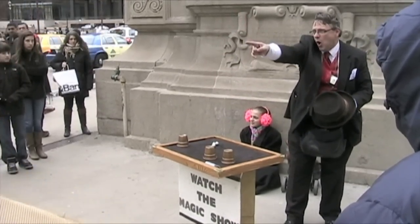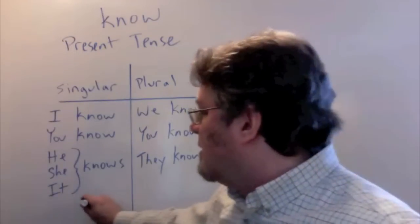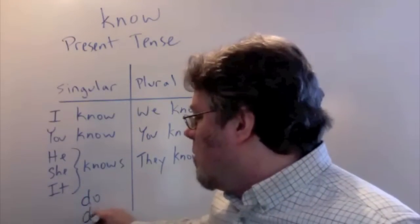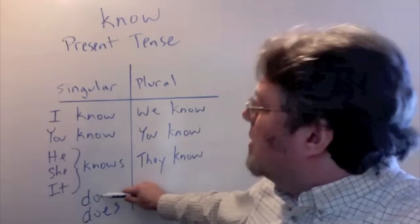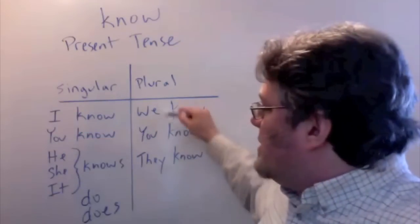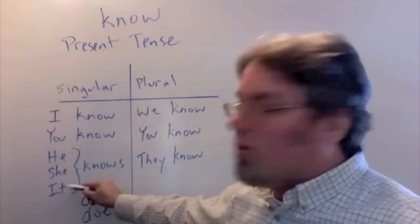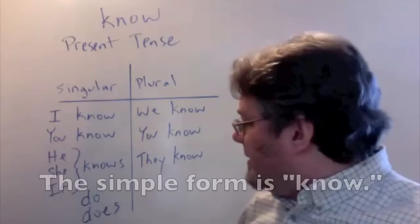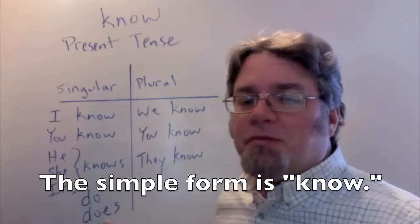The helping verbs for the present tense are do or does. So you use do with I and you, we, you, and they. But use does with he, she, or it. And then the simple form is used with these helping verbs.